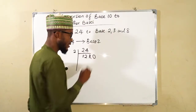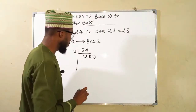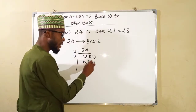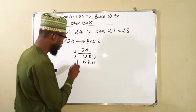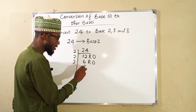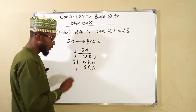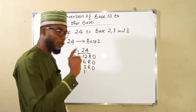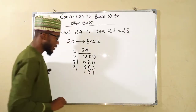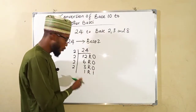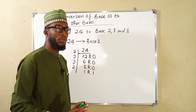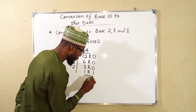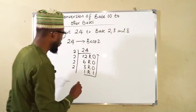2 can go into 12 six times without remainder. 2 can go into 6 three times without remainder. 2 can go into 3 one time with remainder 1. Lastly, 2 cannot go into 1, so we stop and collect the set of these numbers.